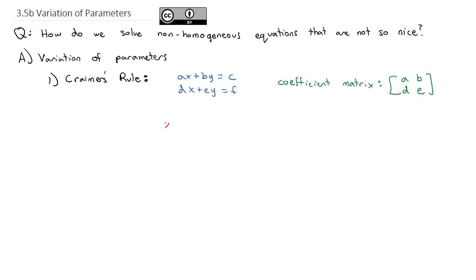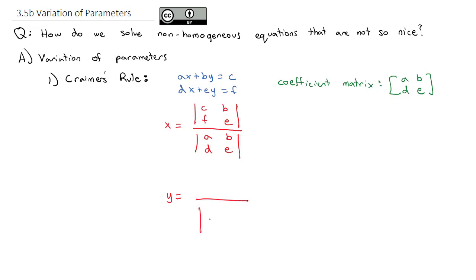If I want to solve for x, it's going to be a fraction where the determinant of the coefficient matrix — a, b, d, e — goes in the denominator. In the numerator, since we're solving for the first variable, we replace the first column with the solutions c and f, while the second column remains the same. If I want to solve for the second variable y, the denominator is again the coefficient matrix, and in the numerator we replace the second column with c and f, keeping the first column exactly the same.